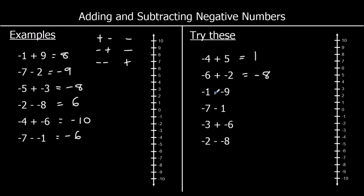Negative 1 take away a negative 9. Negative 1 is our starting point. Taking away a negative is the same as adding, so negative 1 plus 9 — counting up 9 — and that's 8. The next one is negative 7 take away 1. Negative 7 is our starting point, going down 1 — that's negative 8.